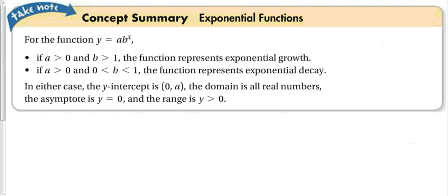Let's look more into exponential functions and what the letters mean. So we have two letters here, A and B. If A is bigger than zero and if B is bigger than one, the function represents exponential growth. If A is greater than zero and B is between zero and one, it represents exponential decay. So that means that if B is bigger than one, the function goes up. If B is in between zero and one, that means if it's a fraction or if it's a decimal, the function will go down and represent exponential decay. In either case, the y intercept is zero comma A.